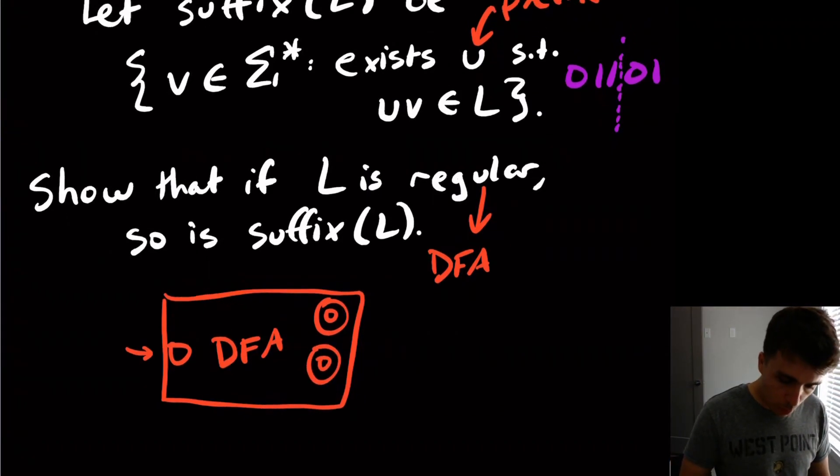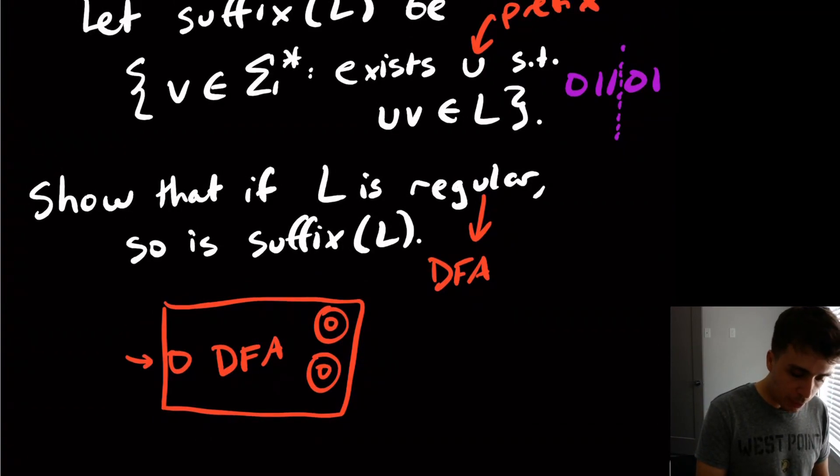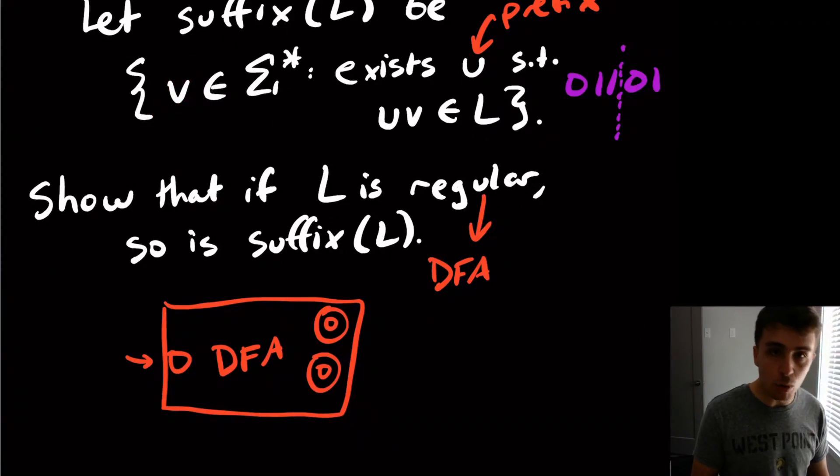So what do we really want to do? Well, what we're trying to do is we're reading the string V. That's what we're reading. But the only check of whether something is accepted or not, of what we can actually check is whether the entire string UV is in L. So if we just fed a string into this DFA right here, we're really reading the UV string. We're not reading the V string. So in one sense, what we want to do is we want to just skip over the U string and immediately start in the V string.